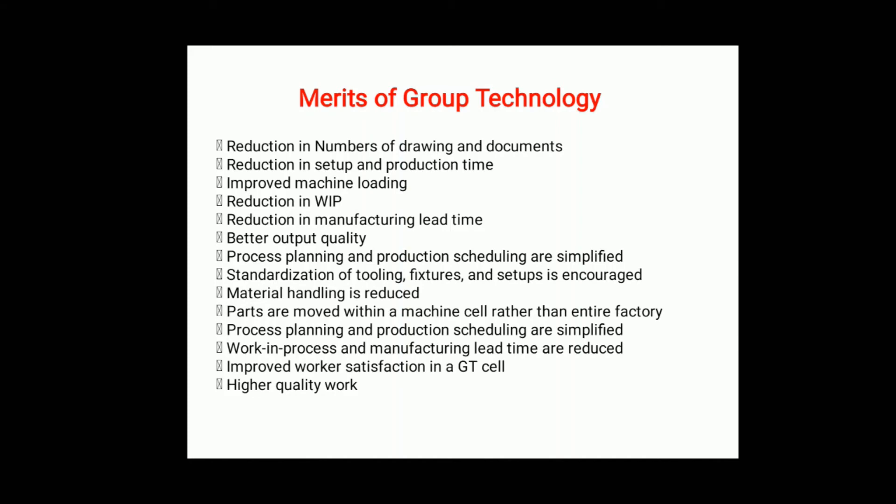Process planning and production scheduling are simplified. Standardization of tooling, fixtures, and setups is encouraged. Material handling is reduced because segregating similar types of parts or manufacturing leads to less material movement. Parts are moved within the machine cells rather than across the entire factory. Work-in-process and manufacturing lead times are reduced, and improved worker satisfaction is achieved in group technology cells, resulting in higher quality work.